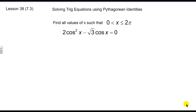Today we're going to jump back into solving some trig equations, and we'll probably have to use the Pythagorean identities we found yesterday. This is a review problem — we're asked to find all values of x, which is an angle, between zero and two pi. What's nice about this equation is it's all in terms of one function, cosine, so I can treat that like an unknown and factor out the common term, which in this case is cosine.